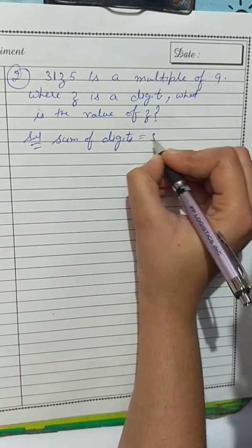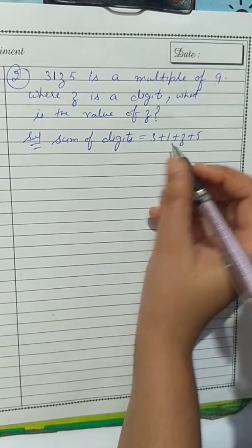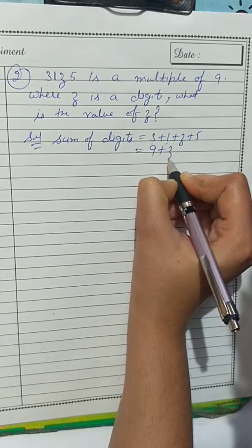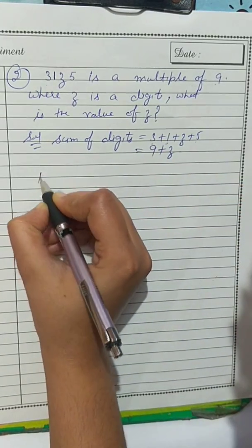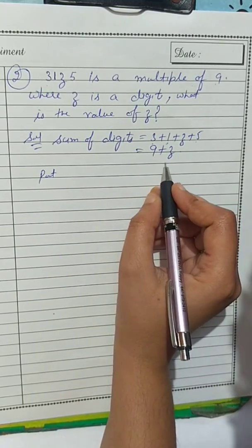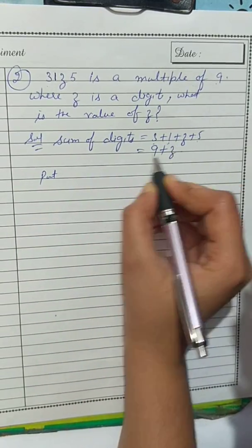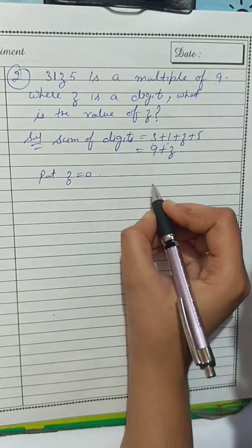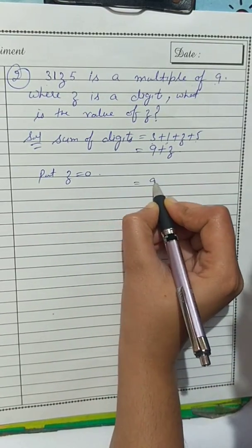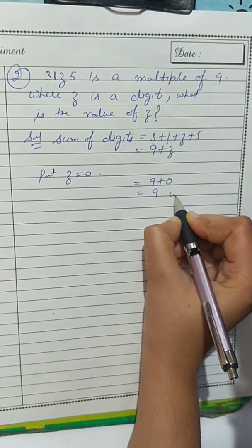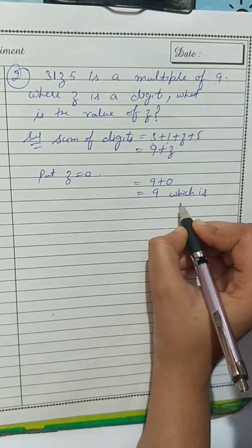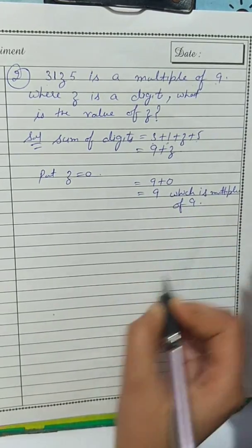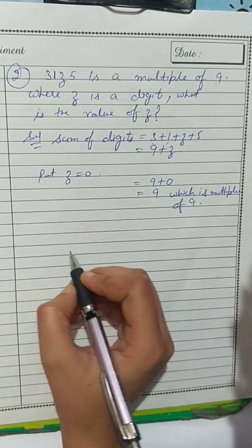Sum of digits: 3 + 1 + z + 5. Now 3 + 1 = 4, and 4 + 5 = 9, so we get 9 + z. In the table of 9, the first value is 9 itself. If we put z = 0: 9 + 0 = 9, which is a multiple of 9. So z = 0 satisfies the condition.